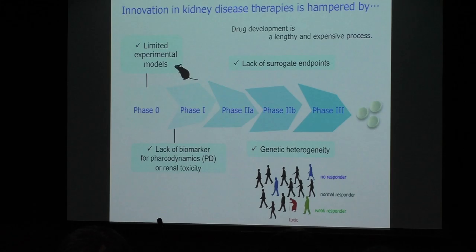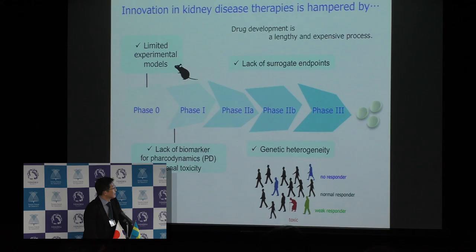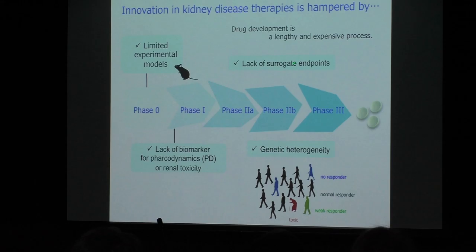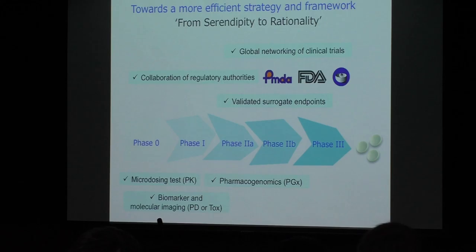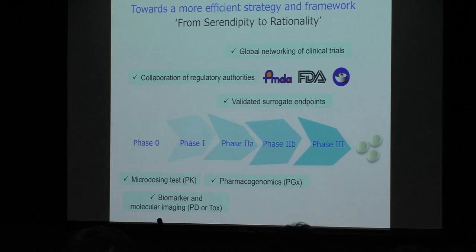Let me summarize. Innovation in kidney disease therapies is hampered by several limitations of animal models, lack of biomarkers and pharmacodynamics tools, lack of surrogate endpoints, and genetic heterogeneities. Therefore, clinical development has been and will be a lengthy and expensive process. It is high time for us to make the whole drug discovery and development process more efficient and rational by relying on the latest science and technologies and bringing together all stakeholders — academia, industry, and regulatory authority — instead of working in parallel with little interaction, so as to overhaul the existing path of drug discovery and development.